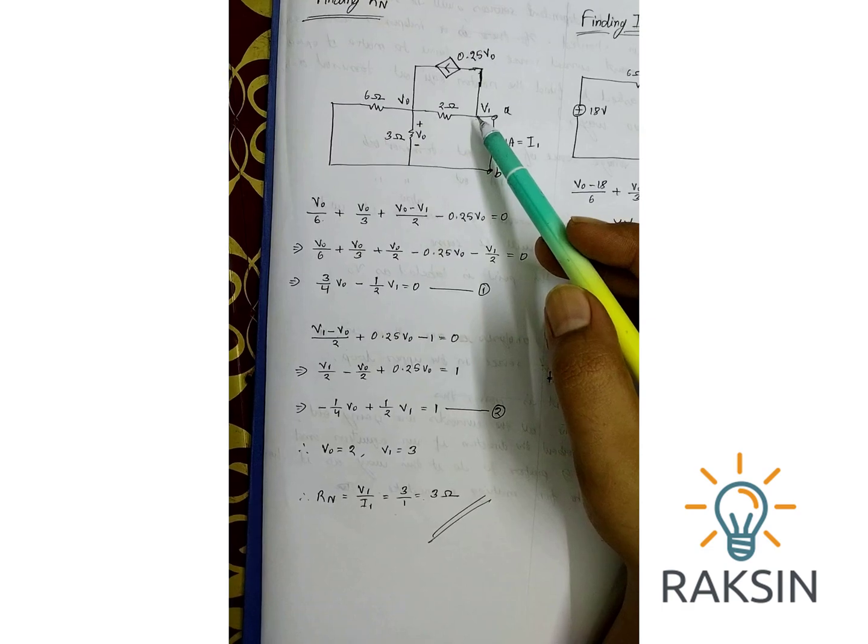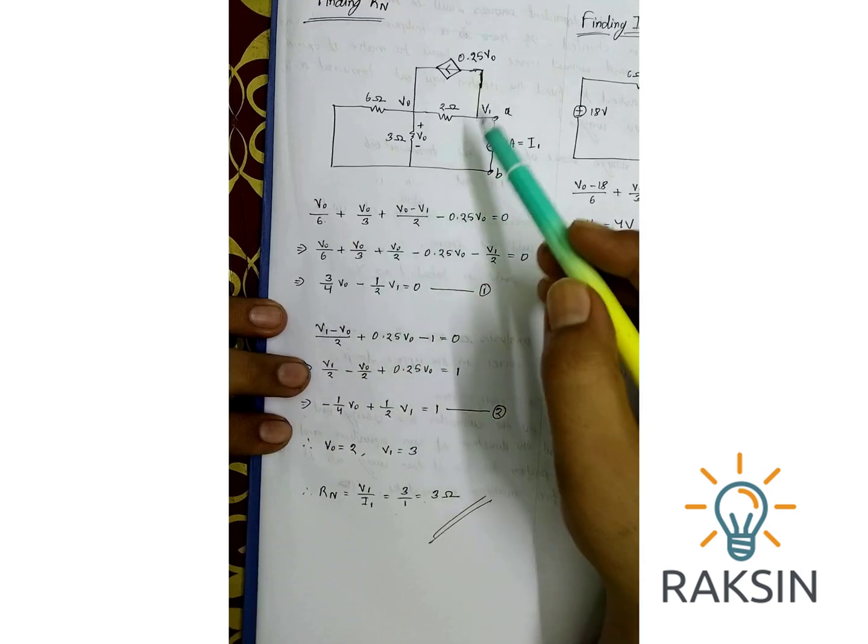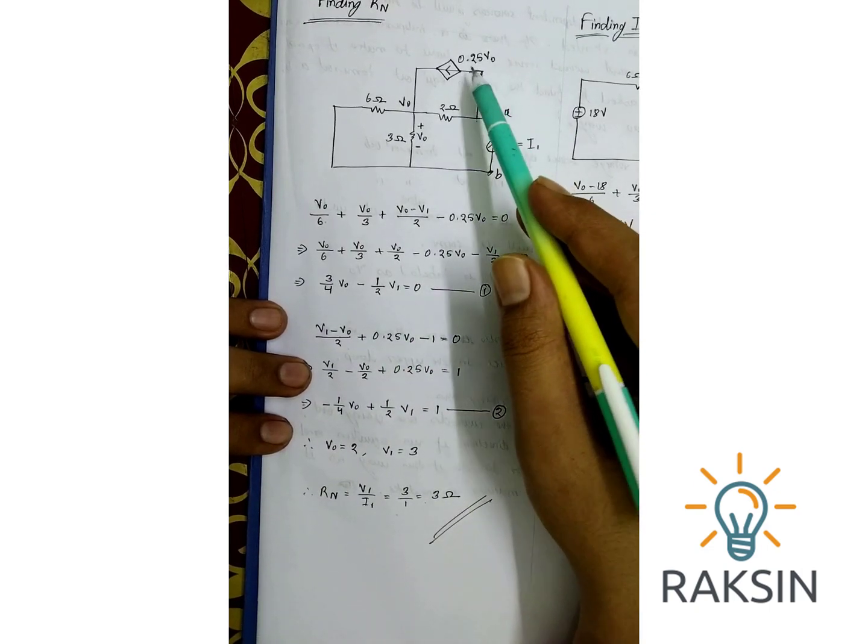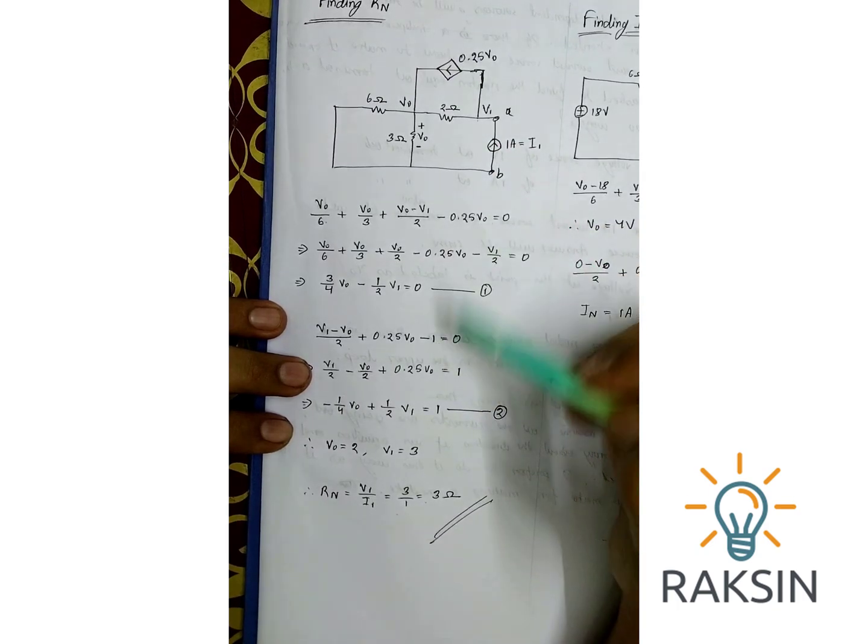Let's again apply KCL to this node and assume all the currents are going out. So V1 minus V0 by 2, 0.25V0. This current is actually going in, that's why we have to make it as minus 1.